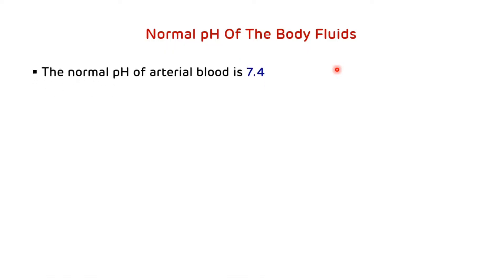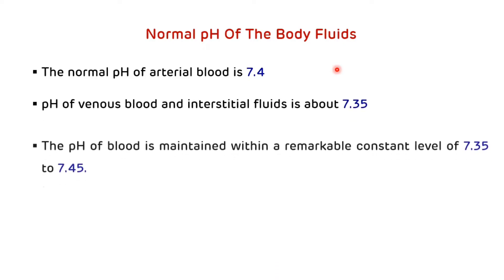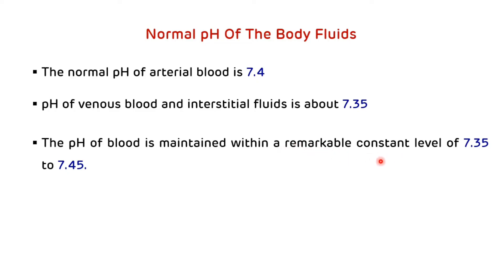The normal pH of the arterial blood is around 7.4, and the normal pH of venous blood and interstitial fluid is around 7.35. The pH of blood is maintained within a remarkably constant level of 7.35 to 7.45. If pH falls below 7.35, it is termed acidosis; if pH rises above 7.45, it is termed alkalosis.